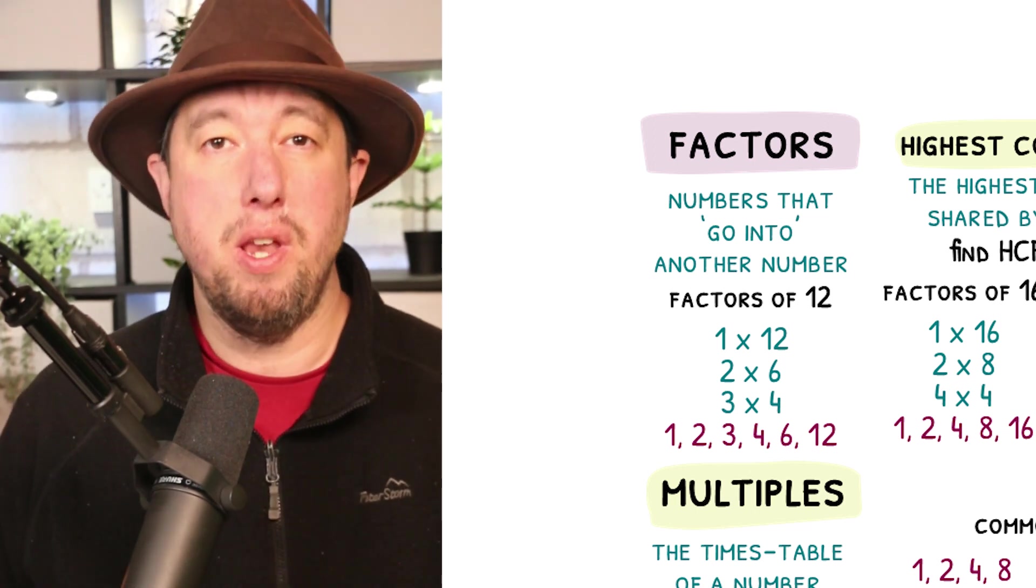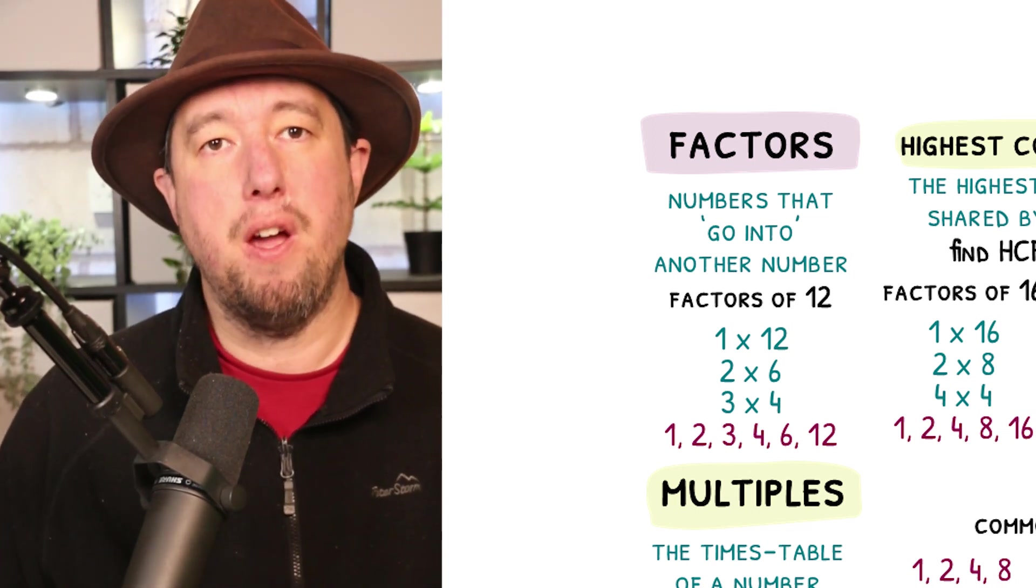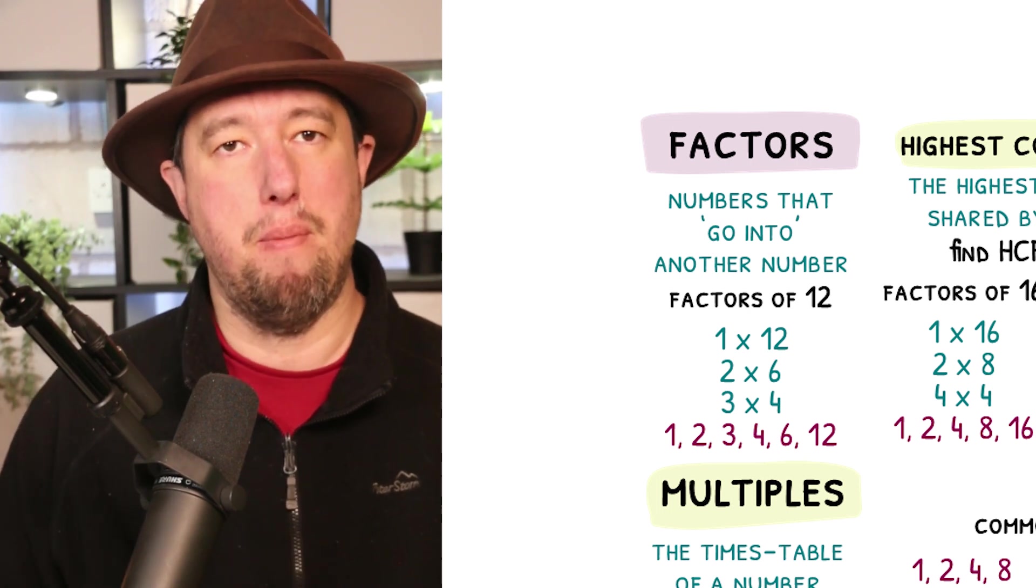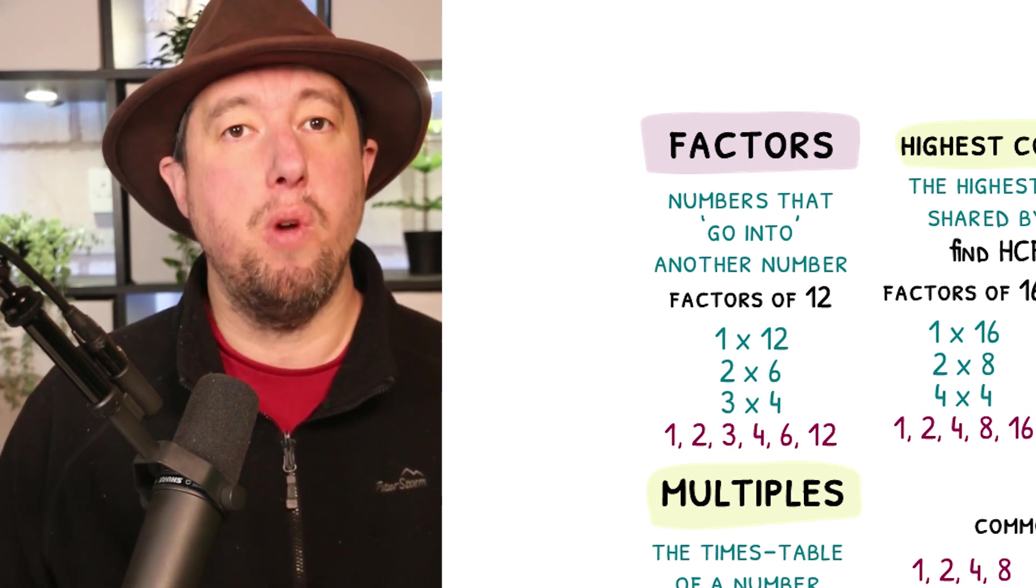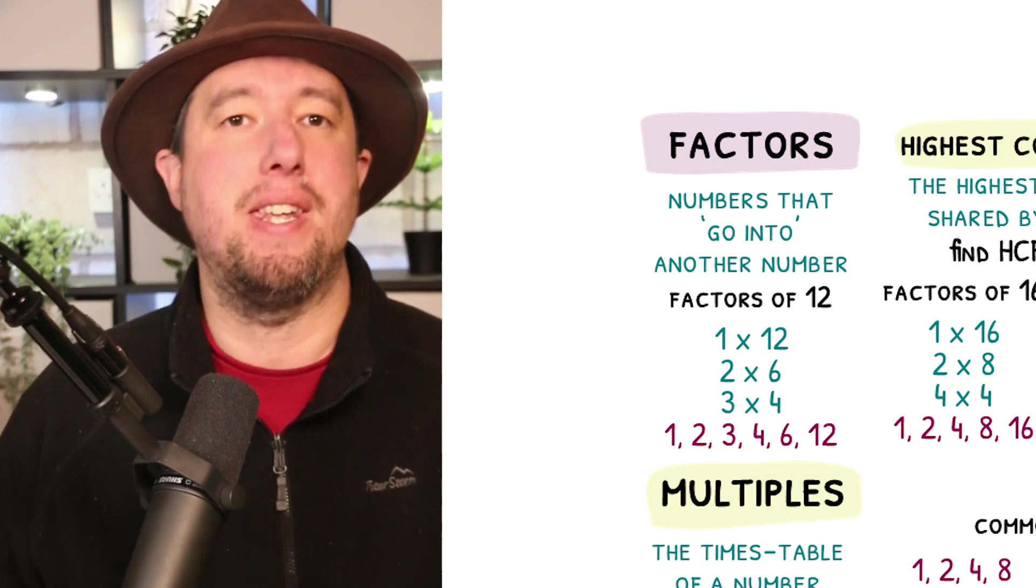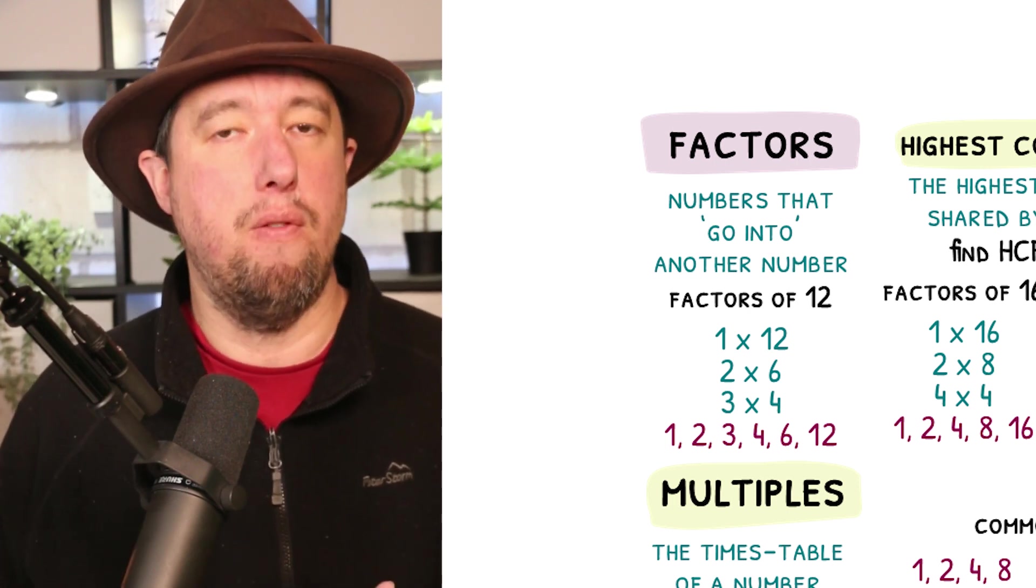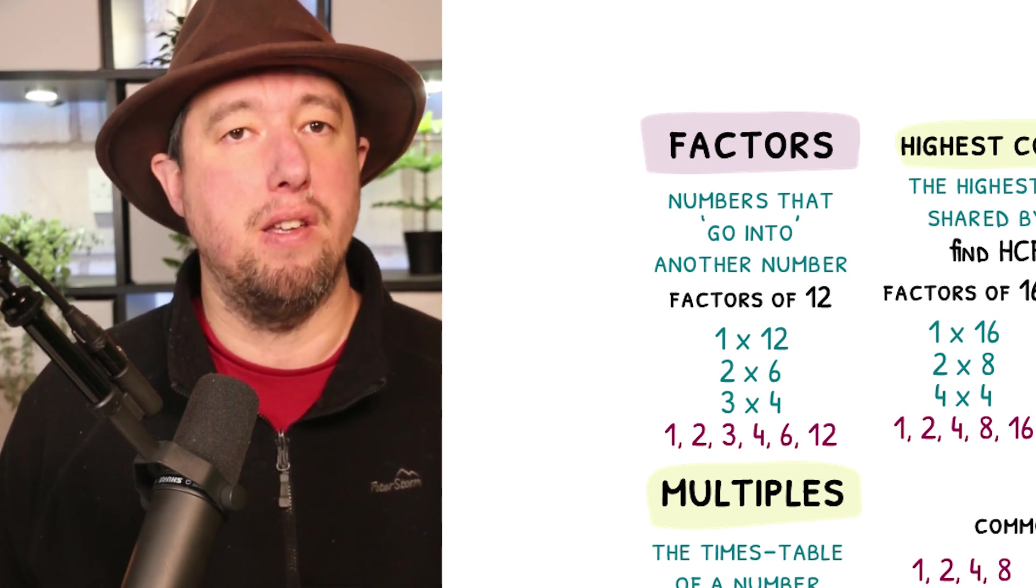Factors are the numbers that go into a number. The simplest way of finding factors is by starting off asking yourself what times table the number is in. We can then make sure we do not miss any out by being a bit systematic. To find the factors of 12, we always start with 1 times 12, so 1 and 12 are both factors.